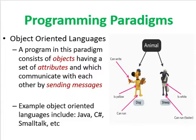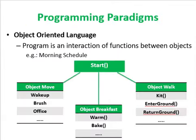Now let's compare this to object-oriented language. A program in this paradigm consists of objects having a set of attributes which communicate with each other by sending messages. You can see that a class has different functions. Languages we can use include Java, C Sharp, Python, etc.